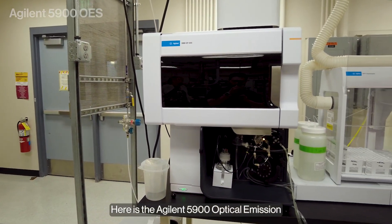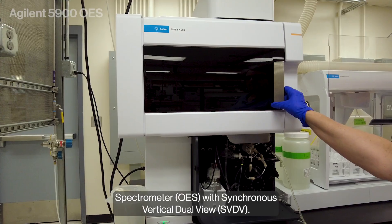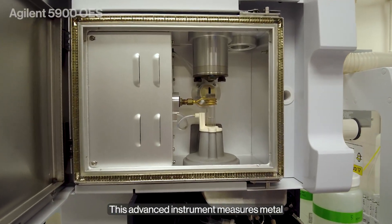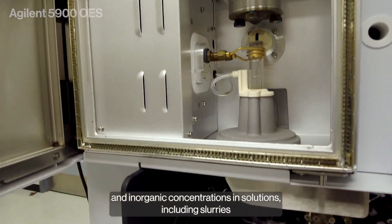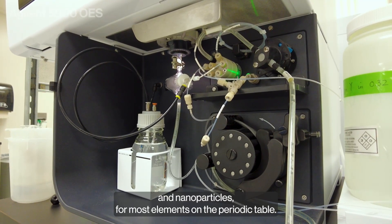Here is the Agilent 5900 optical emission spectrometer with synchronous vertical dual view. This advanced instrument measures metal and inorganic concentrations in solutions, including slurries and nanoparticles, for most elements on the periodic table.